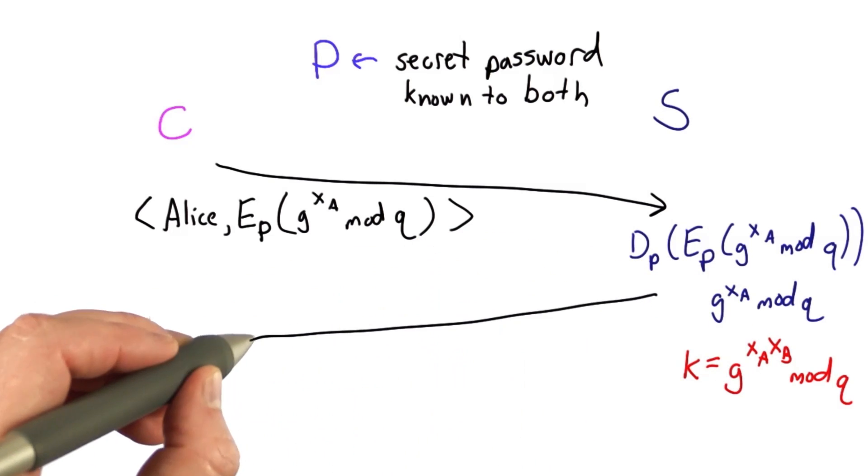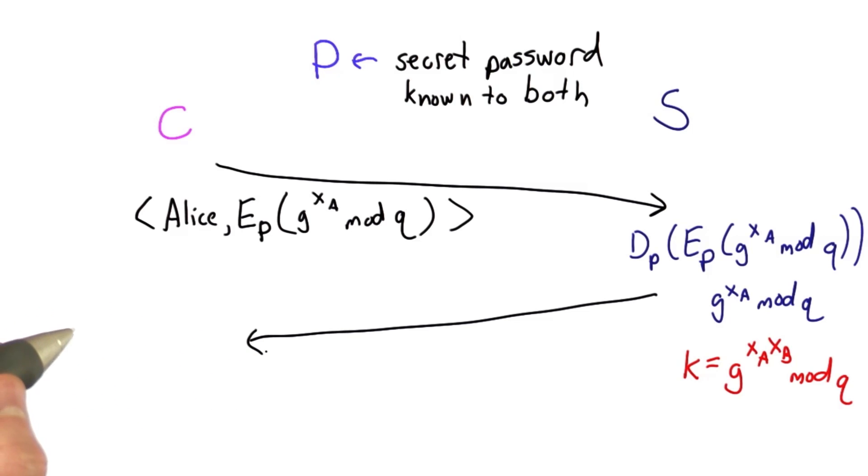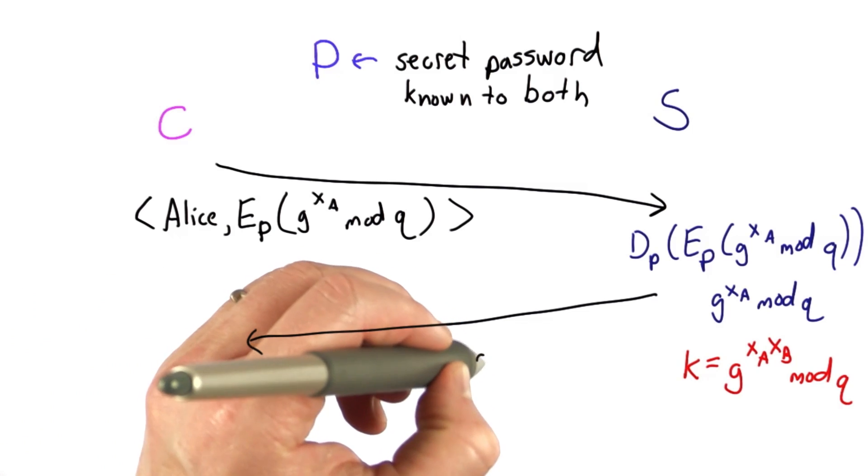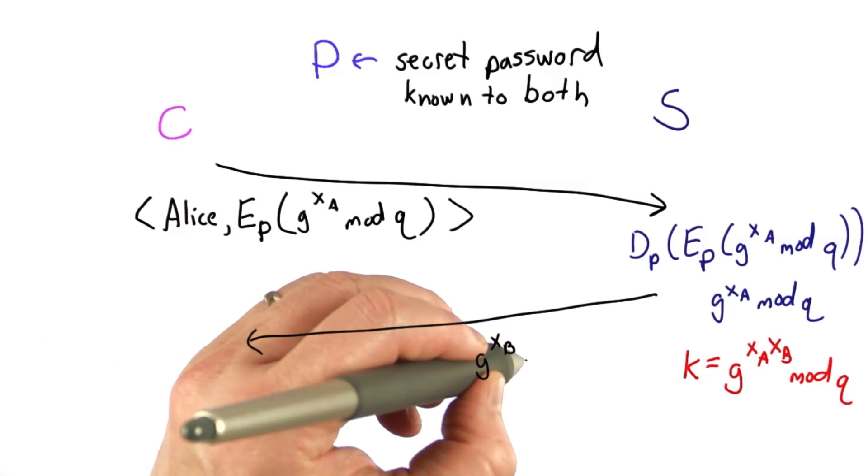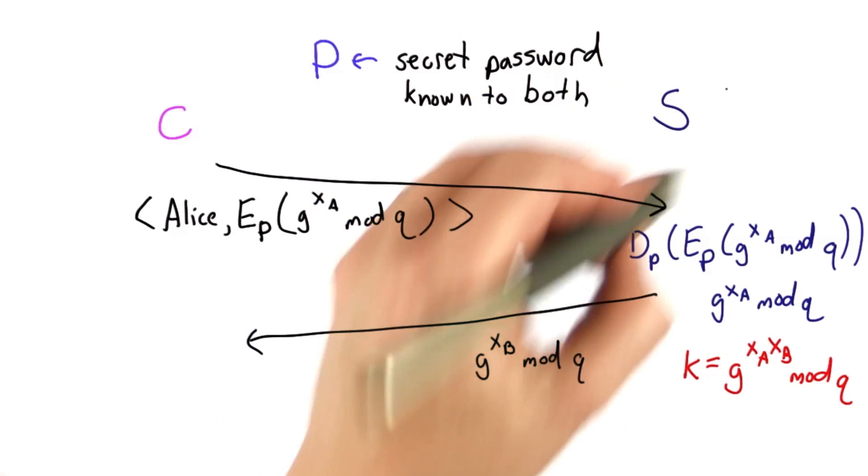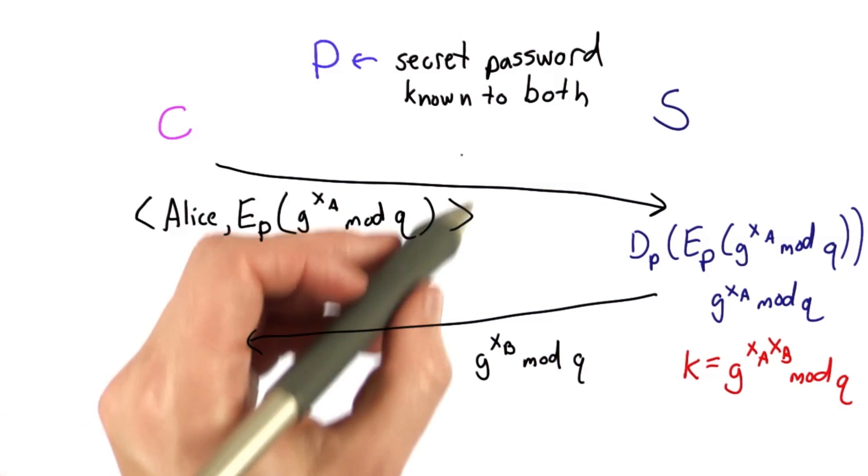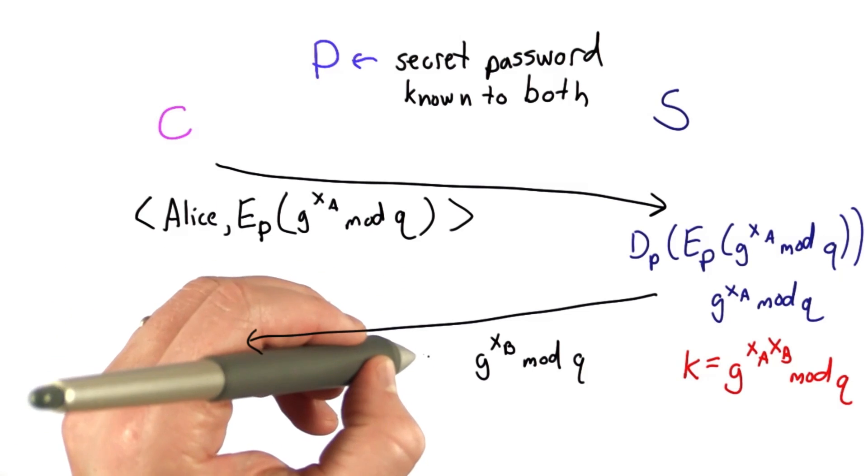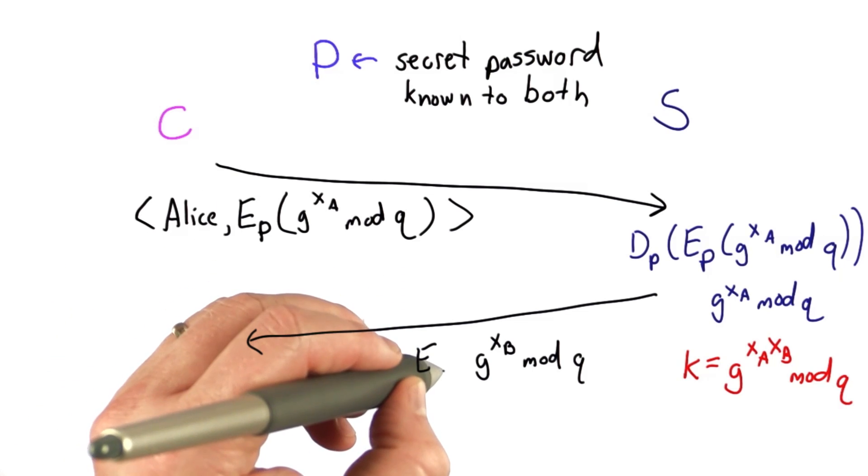As in the Diffie-Hellman protocol, it also sends a message back to the client. In Diffie-Hellman, that would just be g to the xb mod q, where xb is the secret value selected by the server. Now we're going to combine that with symmetric encryption, encrypting that with the password.